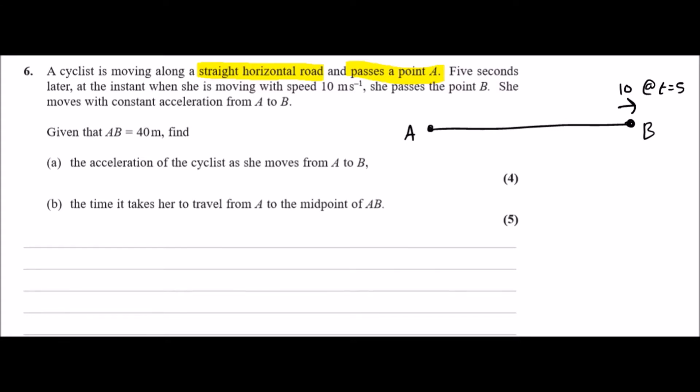She moves with constant acceleration throughout the whole journey, so the constant acceleration is here a. Given that AB is 40 meters, find the acceleration of the cyclist as she moves from A to B. Pretty straightforward, this one.